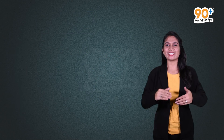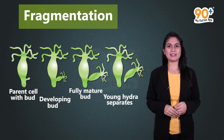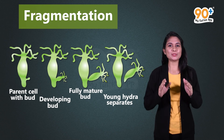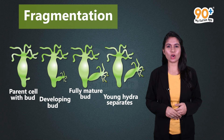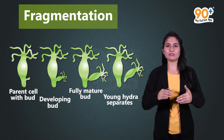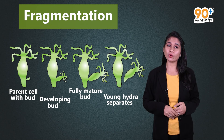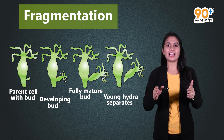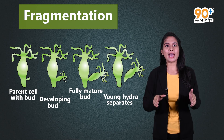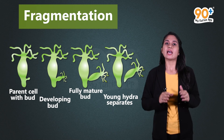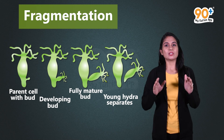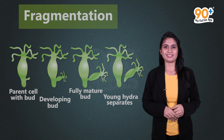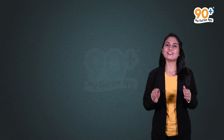Next is fragmentation. The parent body breaks into small pieces called fragments, and these fragments grow into adults which can produce young ones. For example, hydra — an adult breaks into small fragments to give rise to young ones.